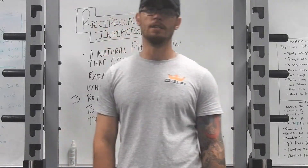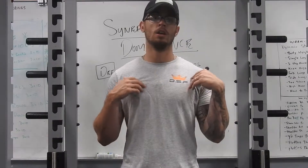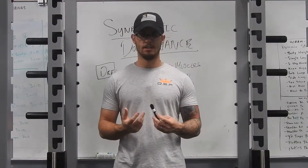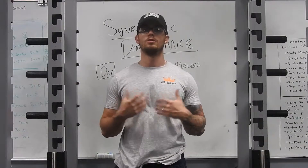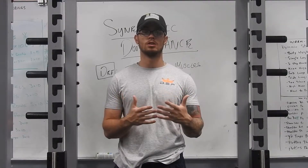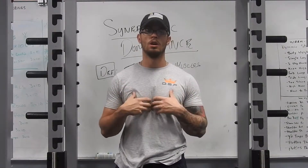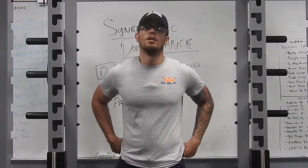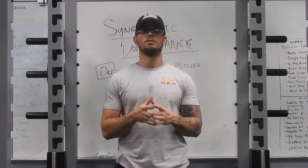The next thing we're going to go over is synergistic dominance. Synergistic dominance is a neuromuscular phenomenon that occurs when dysfunctional movement patterns have been acquired by the lifter. For example, using the bench press: normally your primary movers on the bench are your pectoralis major. What happens when synergistic dominance occurs is the synergist muscles help out because the primary movers — your pecs — are inhibited or aren't functioning properly. The triceps and anterior deltoids then allow for overcompensation because the pecs aren't working correctly.